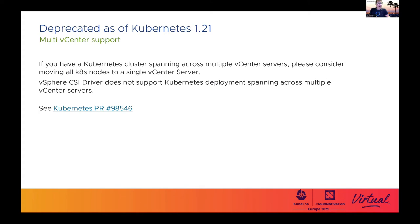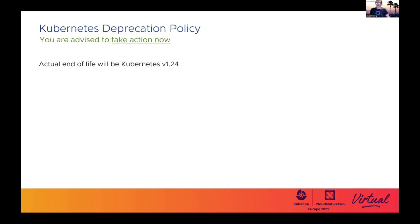This one could be problematic for a few people. Deprecation of support for a Kubernetes cluster spanning multiple vCenters is being announced as of Kubernetes 1.21. The workaround would be to move your Kubernetes nodes into a single vCenter. These deprecation notices follow the Kubernetes deprecation policy, meaning you're getting advance notice now. Actual dropout of these features is not expected until the 1.24 release, but don't wait — start reacting to these deprecation notices now.